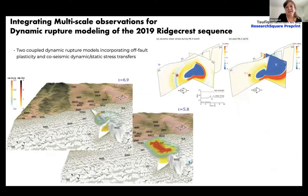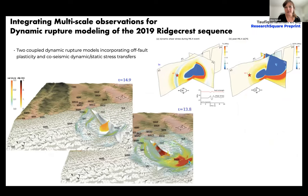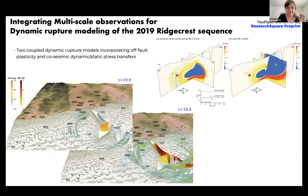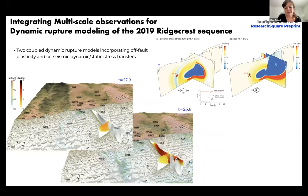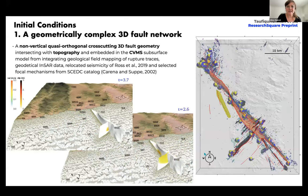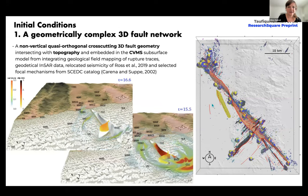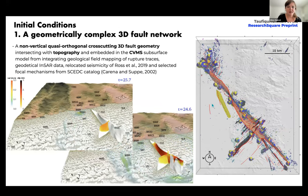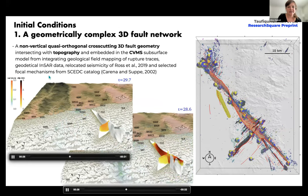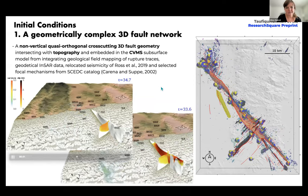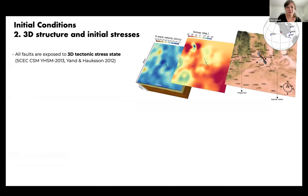Here's an example of integrating multi-scale observations into dynamic rupture modeling. These are two coupled dynamic rupture models of the Coso Valley foreshock and mainshock of the Ridgecrest sequence, incorporating off-fault plasticity, topography, 3D subsurface velocity structure, and co-seismic dynamic and static stress transfers. We use data first for initial conditions — defining our fault network, similar to the SCEC CFM — combined with a 3D subsurface velocity model to constrain scattering and attenuation. Inside the model, we use located seismicity and selected focal mechanisms.